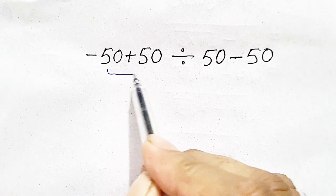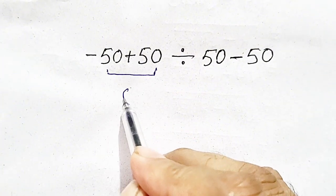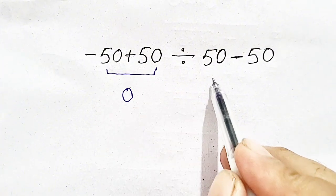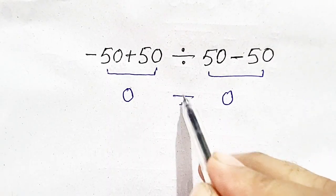If we look at these numbers, minus 50 plus 50 will be 0, and 50 minus 50 is also equal to 0. So we get 0 divided by 0.